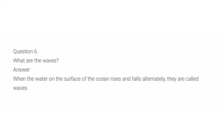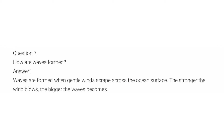Sixth question is, what are waves? The answer is, when the water on the surface of the ocean rises and falls alternately, they are called waves. Waves are formed when gentle wind blows across the ocean surface. The stronger the wind blows, the bigger the wave becomes.